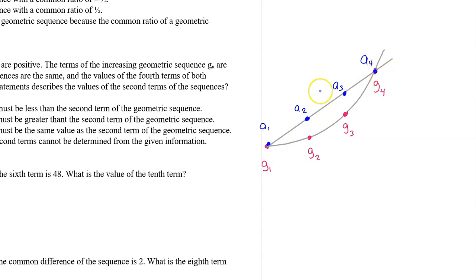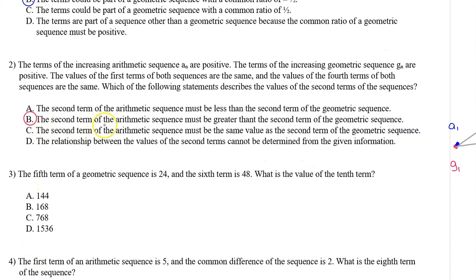In the setup, we are told that the first term of both sequences are the same, and the fourth terms of both sequences are also the same. Under these conditions, as you can see, the value of the second term of the arithmetic sequence is greater than the second term of the geometric sequence. Because the second term of the arithmetic sequence must be greater than the second term of the geometric sequence, the answer is B.